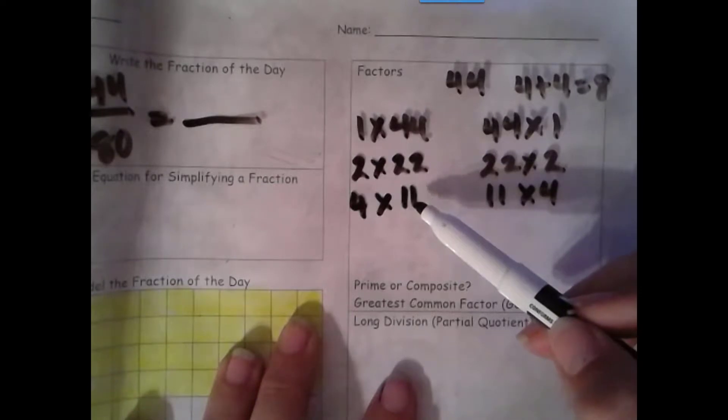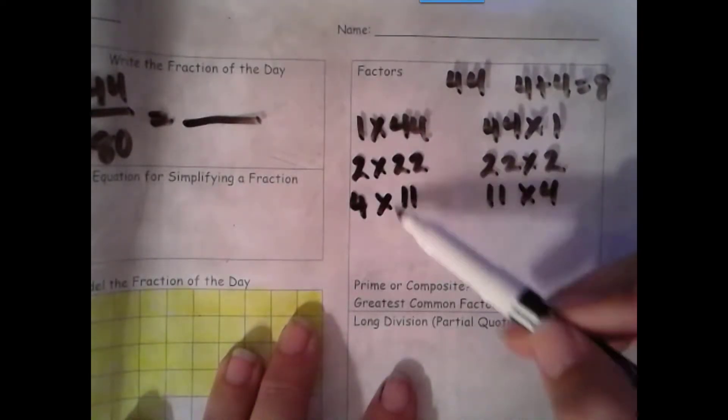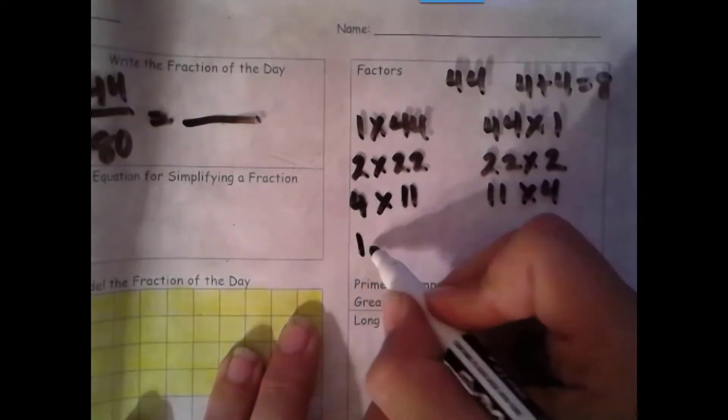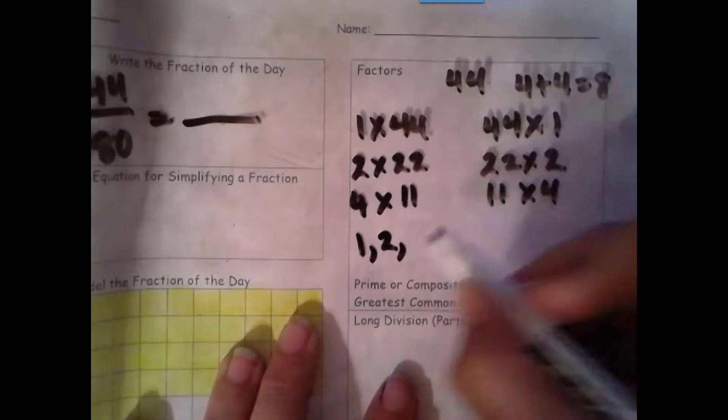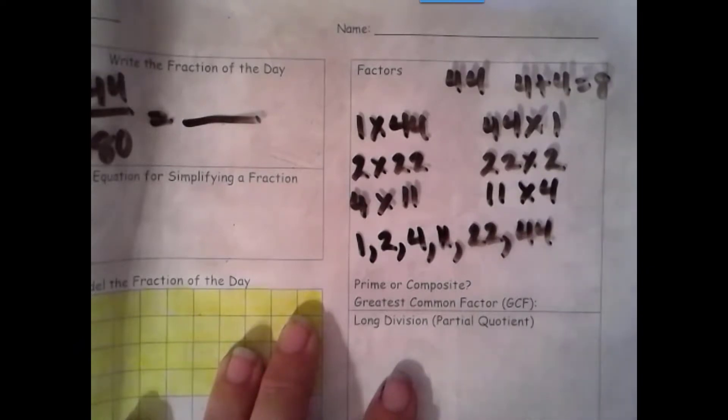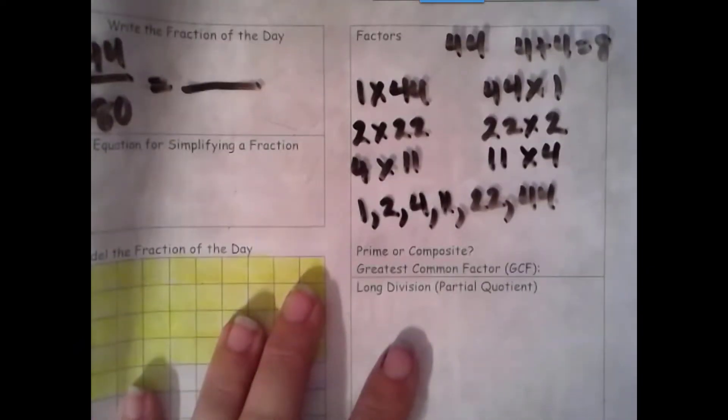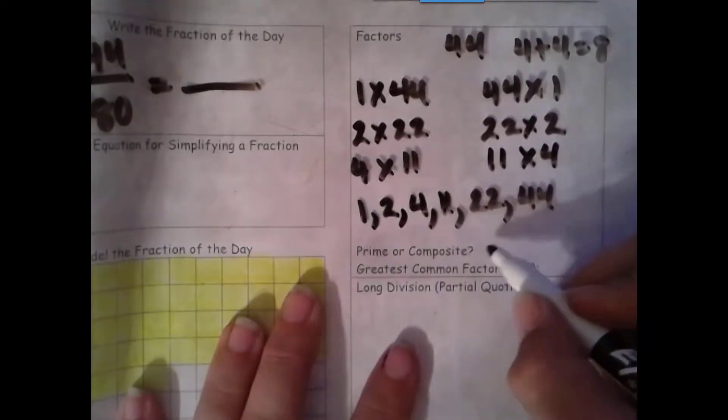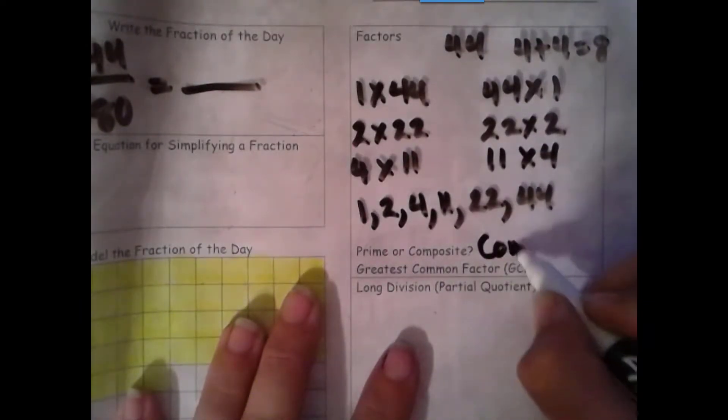Then we get to 11. Also, 11 is prime. When we've gone in order and our second factor is prime, then we're done. So let's list our factors from least to greatest. We have 1, 2, 4, 11, 22, 44. We have 6 factors. That is more than 2 factors, so it is composite.